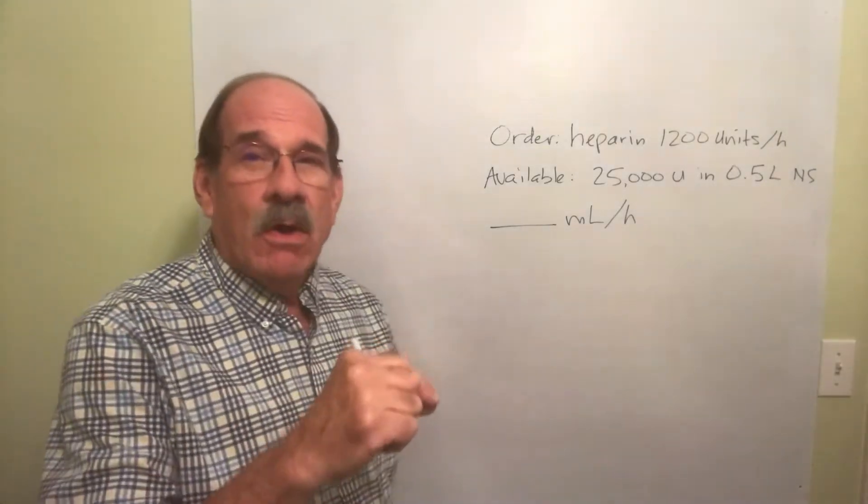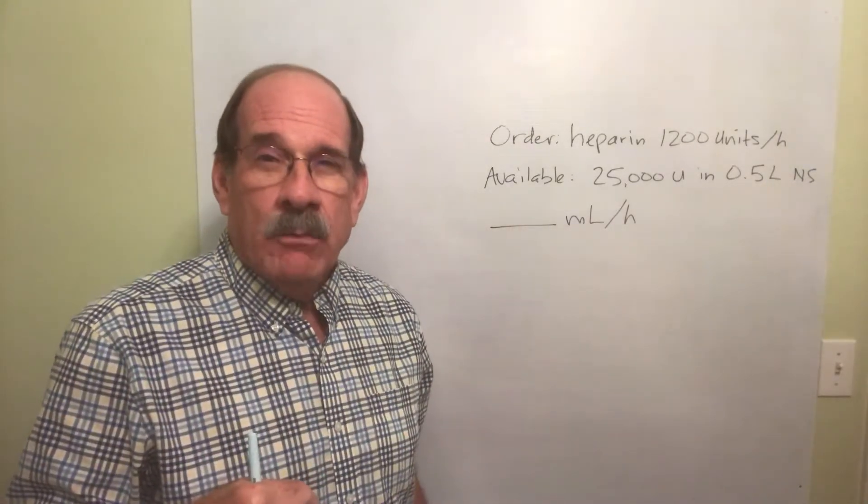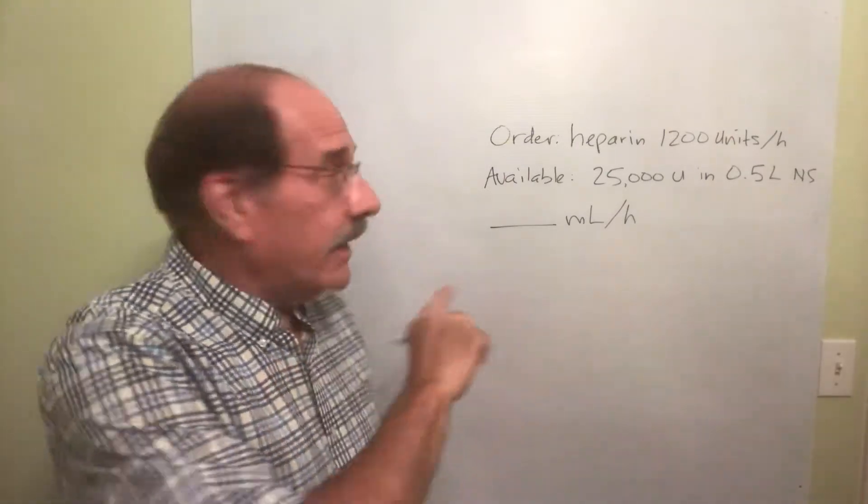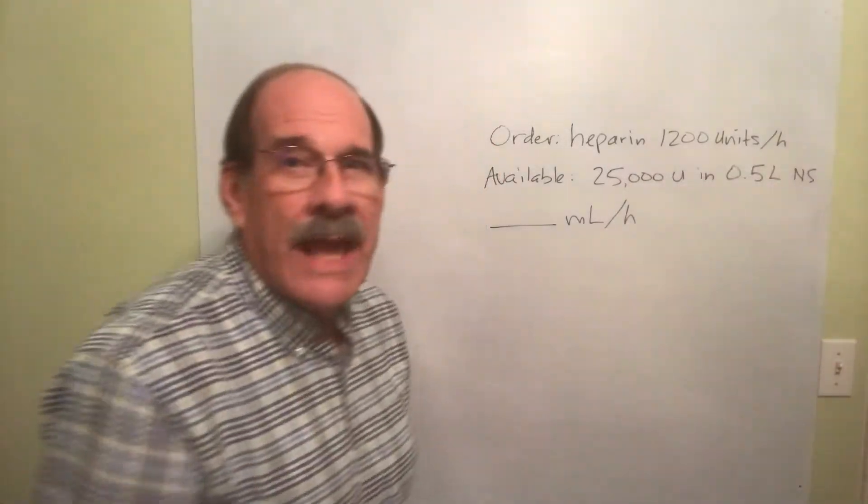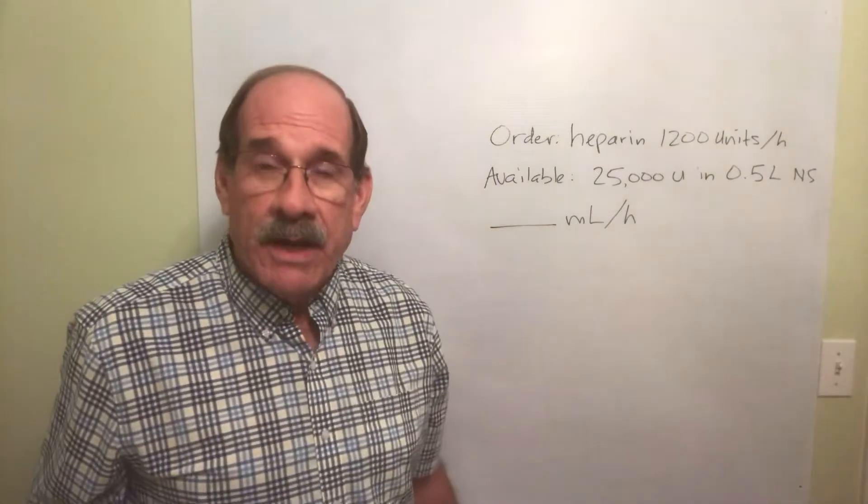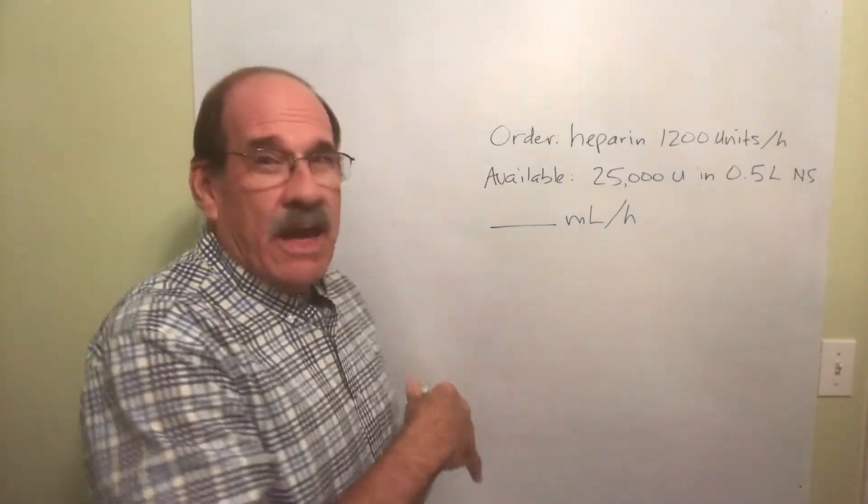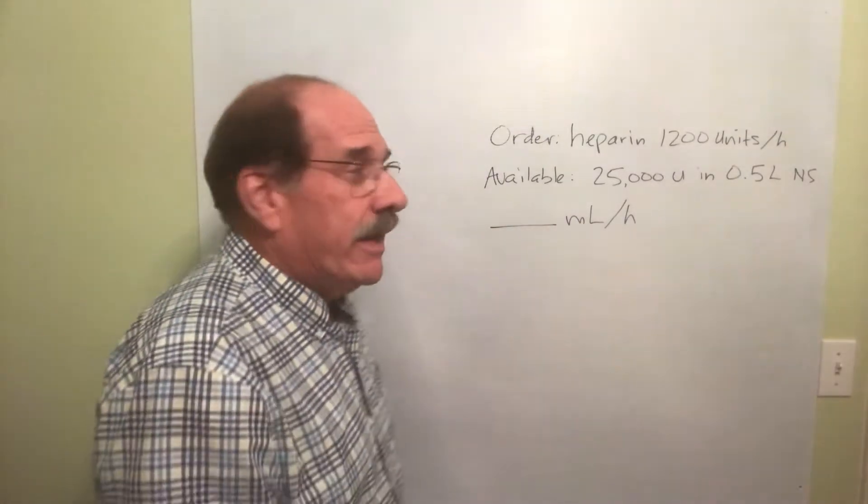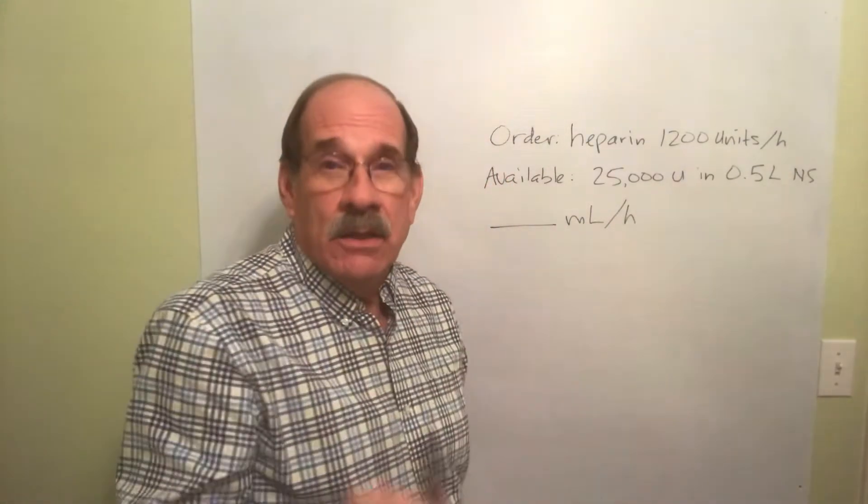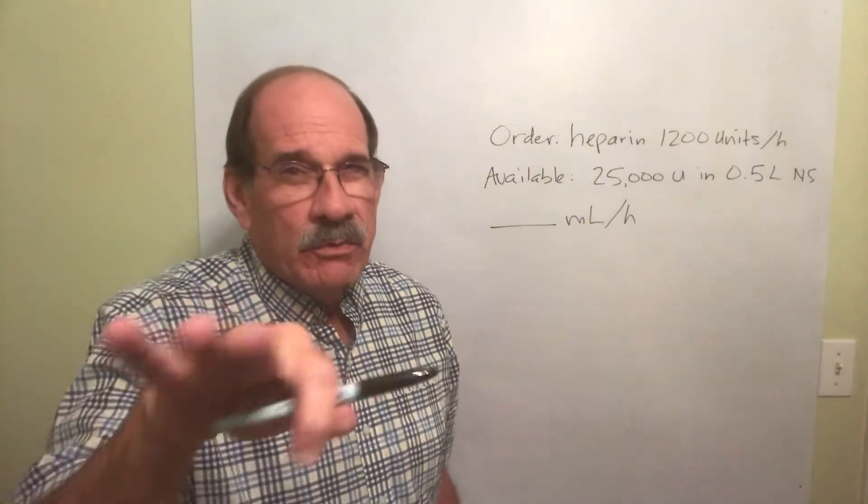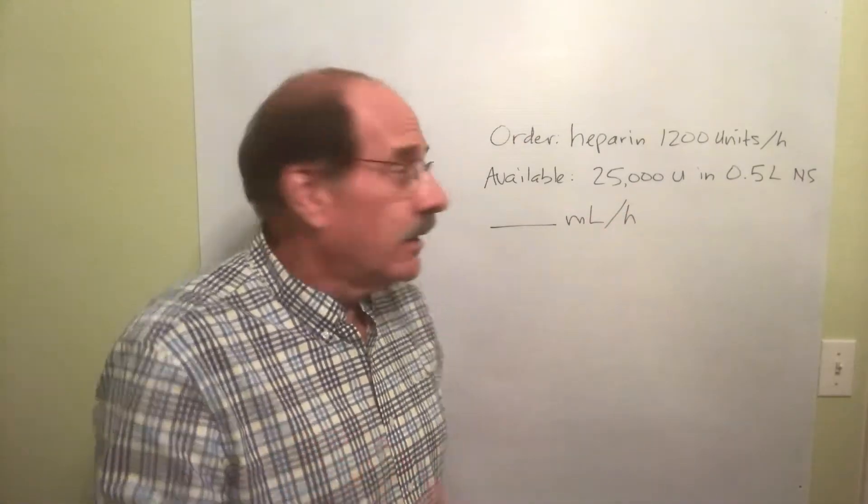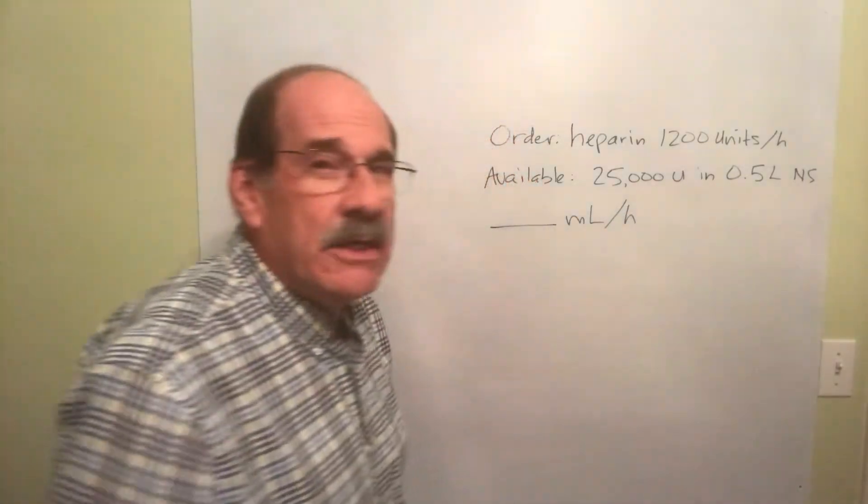We're gonna have some heparin dissolved in our IV fluid and we're going to give an infusion dripping it into the patient slowly. But the order is like this: 1,200 units per hour. I'm gonna give the patient 1,200 units every hour that goes by. The thing that's kind of weird is some vastly large numbers. What have I got? I've got 25,000 units. By the way, a U is a symbol for units. You're not supposed to write those yourself but you'll see them written. I got 25,000 units of heparin dissolved in 0.5 liters of normal saline.